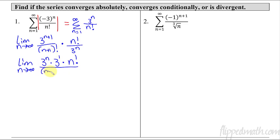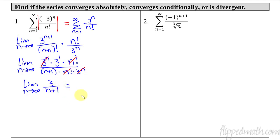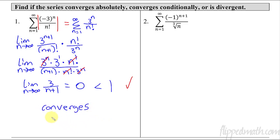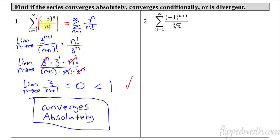Expanding the factorial gives n plus one times n factorial, still times three to the n. Now things cancel — the three to the n's cancel, and the n factorials cancel. I'm left with the limit as n approaches infinity of three over n plus one, which equals zero. That is less than one, so using the ratio test, the absolute value converges. And if the absolute value converges, we are done — we say it converges absolutely. There's no need to check the original series; we know it also converges because of this.